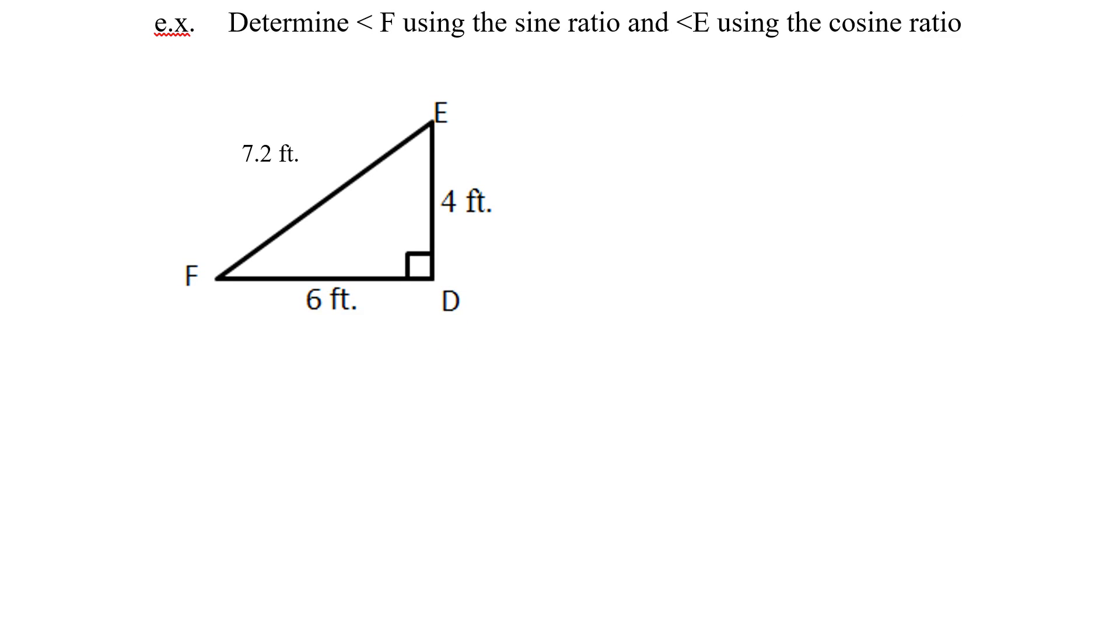Determine angle F. So we're not asking for the sine of F or the cos of F. We want to find what the actual angle is. But the restriction is we're going to use the sine ratio. And then we're going to find E but we're going to use the cosine ratio. So let's start labeling this triangle for F. Again hypotenuse longest one across from the 90, through the angle and the triangle to get to the opposite, and touching the angle is the adjacent.